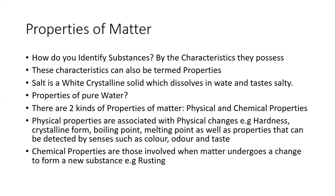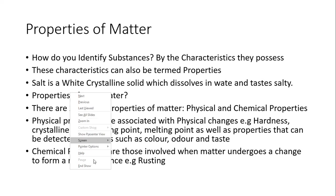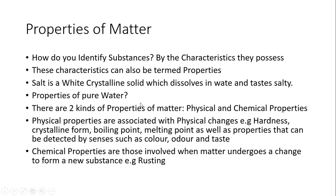For example, the properties of pure water: it is odorless, colorless, and tasteless. There are two kinds of properties of matter — physical and chemical. Physical properties are associated with only physical changes, meaning no new substances are formed. Chemical properties are those involved when matter undergoes a change that will form a new substance. Physical properties include boiling point — water boils at 100°C — melting point of ice is 0°C, crystalline form, malleability, and strength.